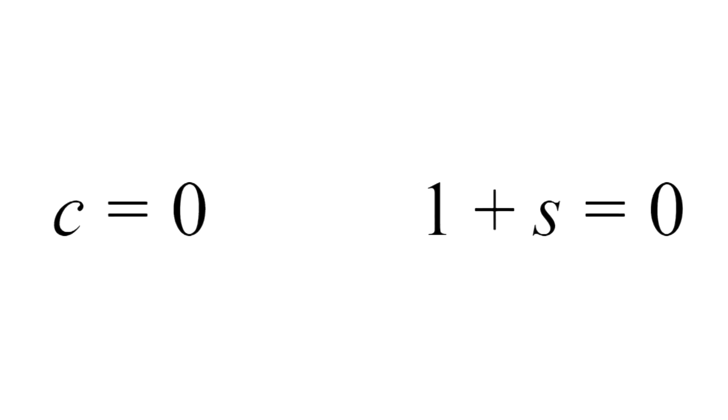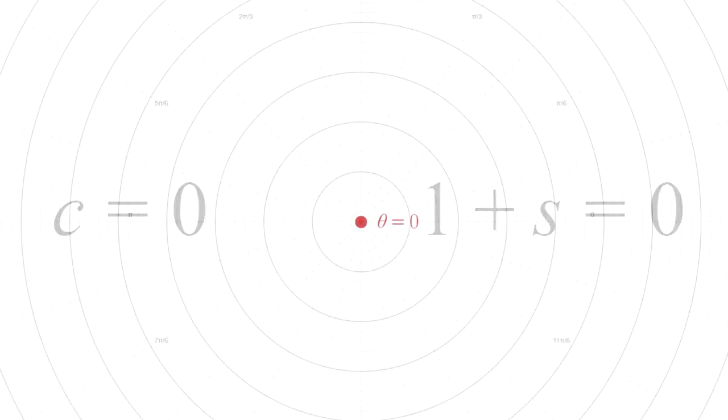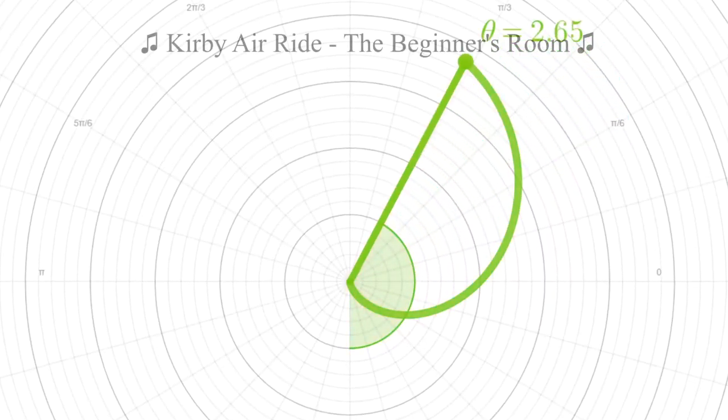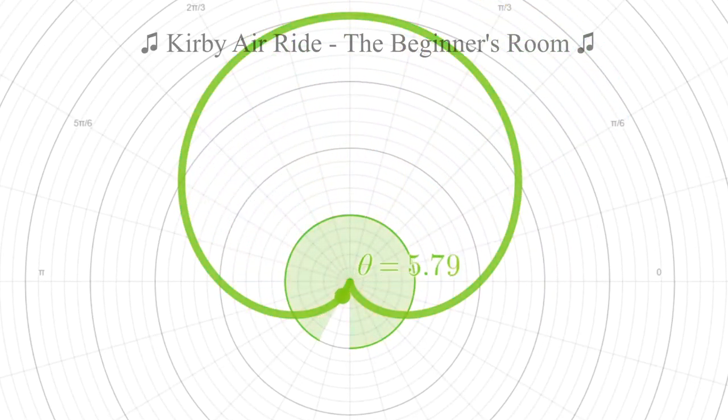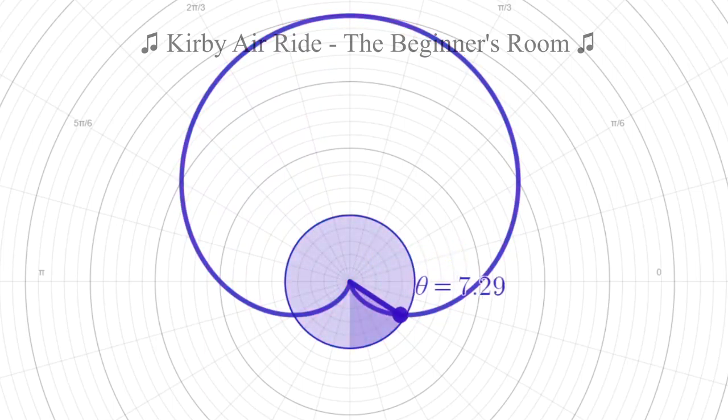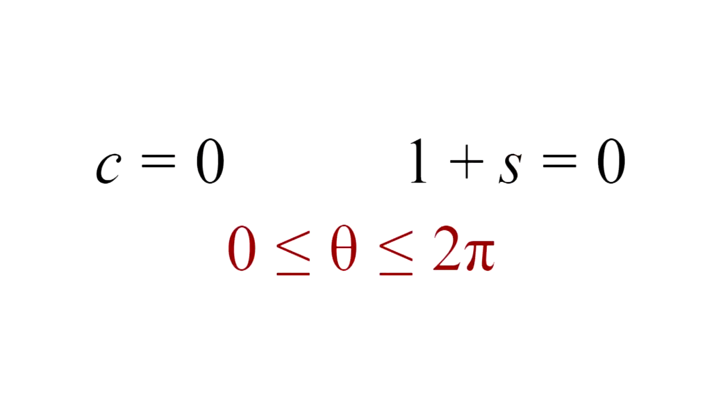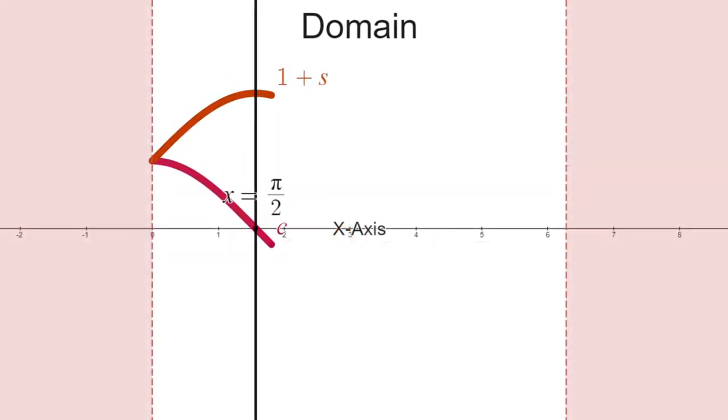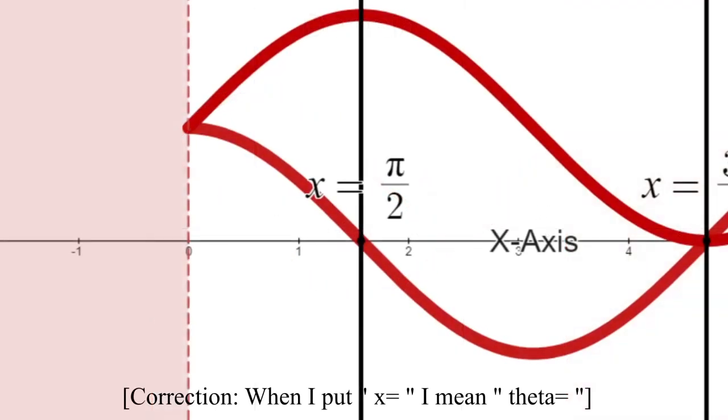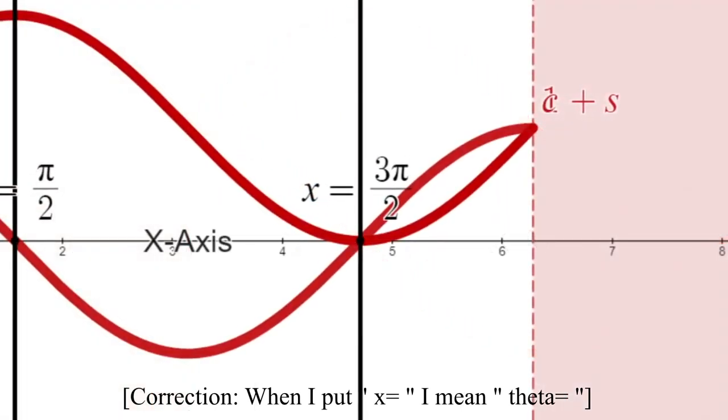Before we evaluate these two solutions, it is important to note that the cardioid is drawn optimally through the angles of 0 to 2 pi, because 2 pi onwards is just redrawing the same curve. This serves as an intuition to the fact that we should restrict our solutions in that domain. Therefore, by evaluating these solutions, we will finally acquire the solutions of pi over 2 and 3 pi over 2, which wraps it up for step 2.